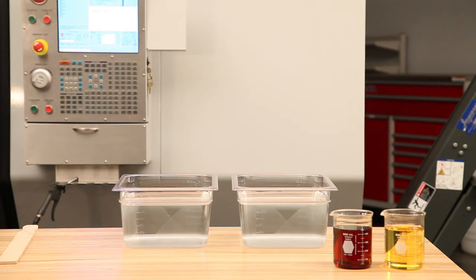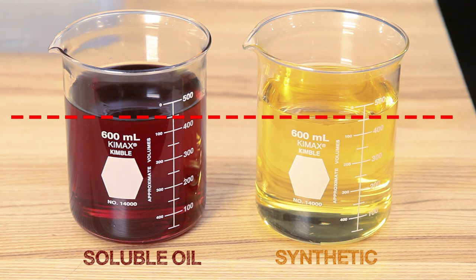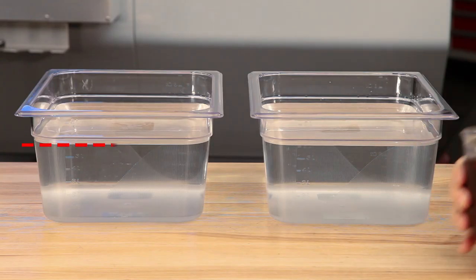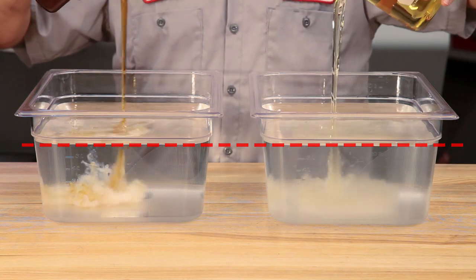Here, we're preparing two test batches of coolant, one using a soluble oil and the other a full synthetic. Both vials are holding the same amount of concentrate, and both of these pans are holding the same amount of water. We add the concentrate and mix thoroughly.